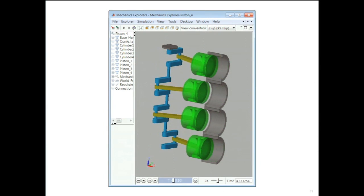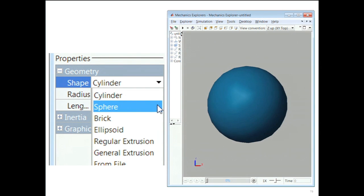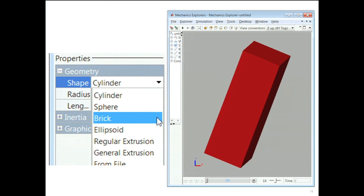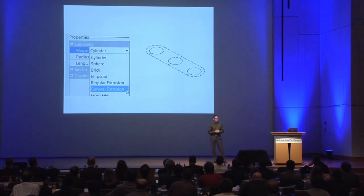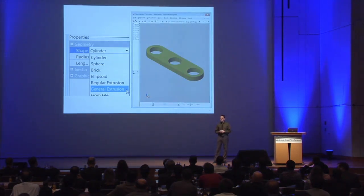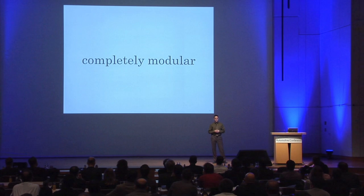In SimMechanics, we provide a set of standard three-dimensional solids, such as cylinders, spheres, and bricks, that you can assemble into more complex parts. To create custom solids, you can define extrusions in MATLAB, where you define a two-dimensional shape in MATLAB and stretch it to become a three-dimensional solid. All of the parts that you define are completely modular.